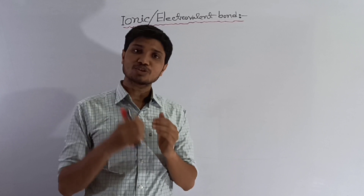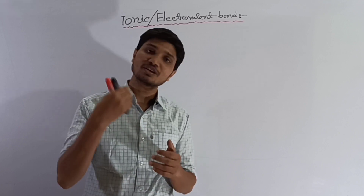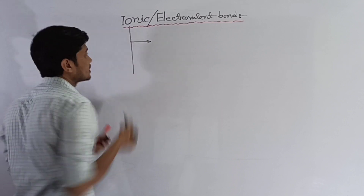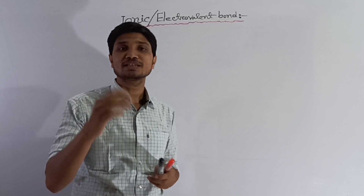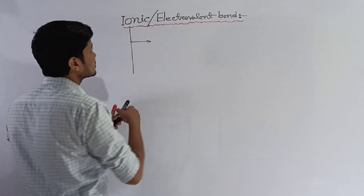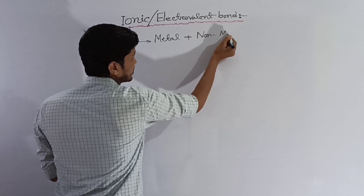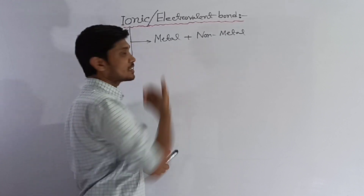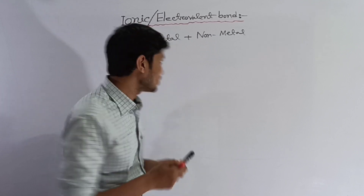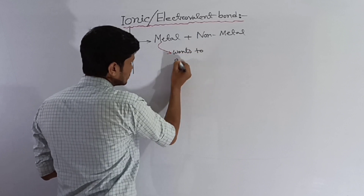The ionic bond is defined as the bond formed between a metal and a non-metal through the complete transfer of electrons. The metal gives up electrons and the non-metal accepts them, resulting in oppositely charged ions that attract each other.